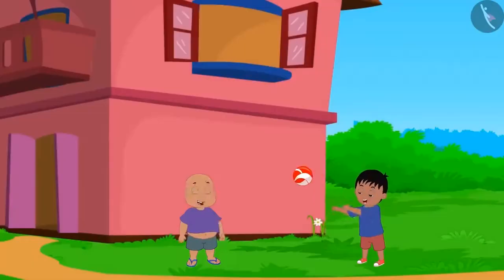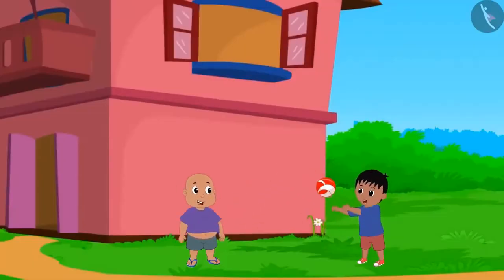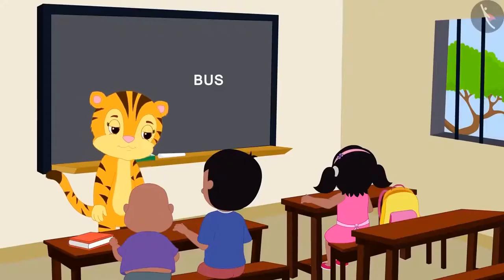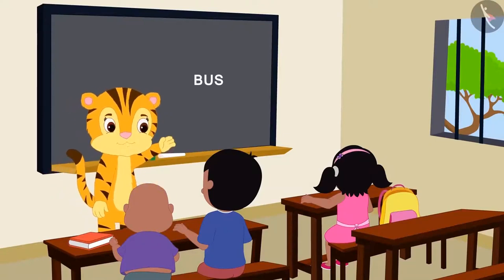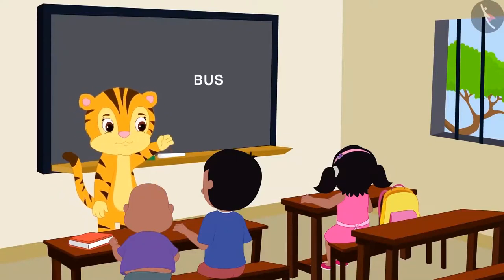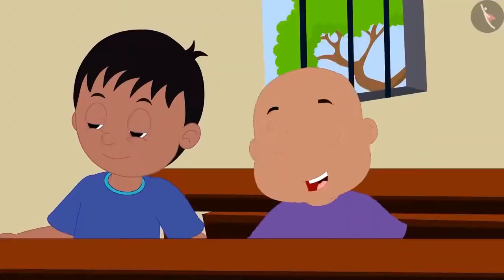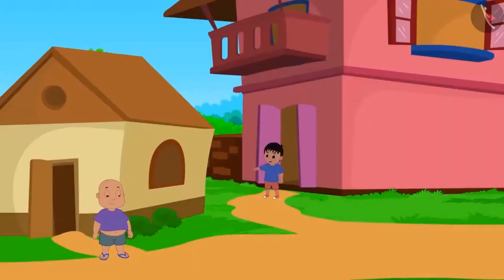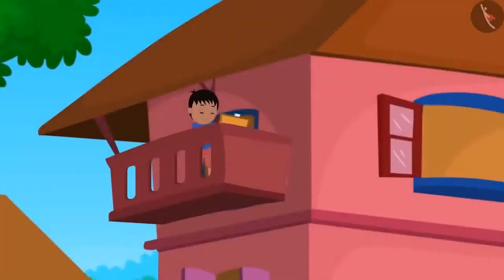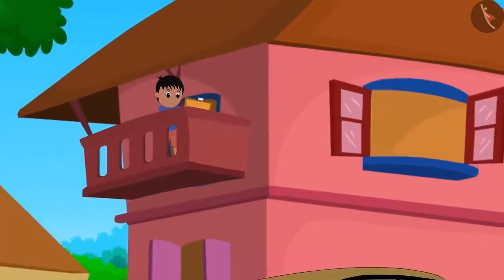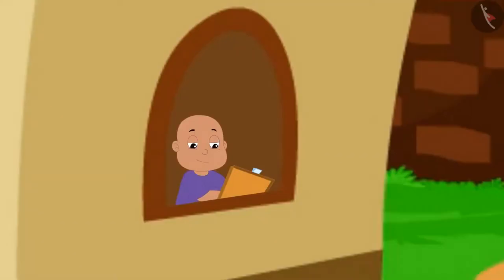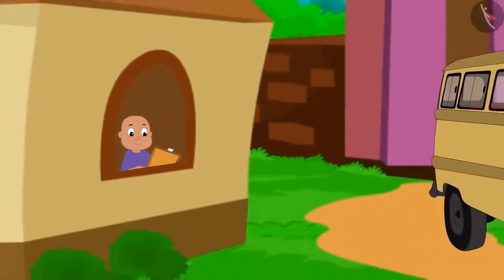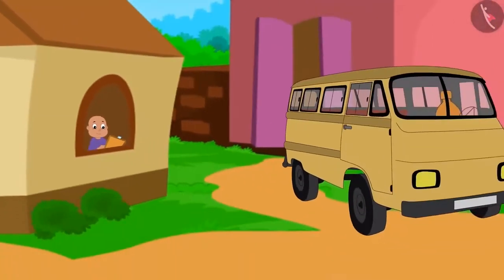Raju and Bablu are best friends. In the classroom, their teacher Mrs. Khanna asked them to draw a picture of a bus as homework. Both of them went home, looked out from the windows of their house, and began to draw the picture of a bus parked in their lane.